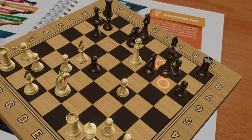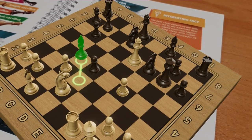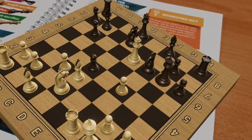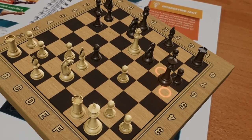Although the king tries to escape from the continuous checks, after Qh3, black is forced to congratulate white.